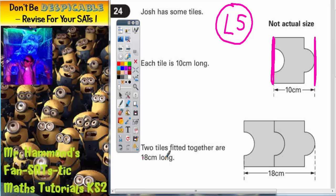It says two tiles fitted together are 18 centimeters long. Now you would think if one tile was 10 centimeters, two tiles would be 20 centimeters, but it doesn't work like that. And it's because when you put one tile on the end of the other, they overlap. This bit here and this bit here where the two tiles overlap.